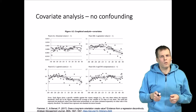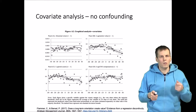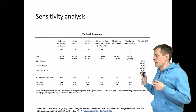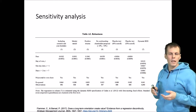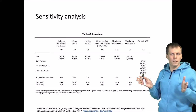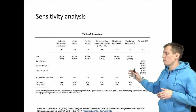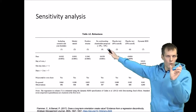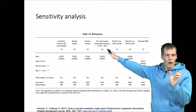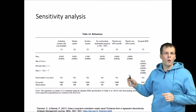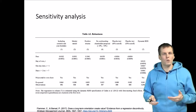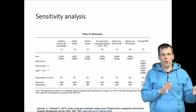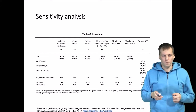Regression discontinuity design also uses sensitivity analysis. You can fit the same model into different subgroups — for example, choosing just a small number of observations right around the cutoff — or use different ways of estimating the trends before and after.